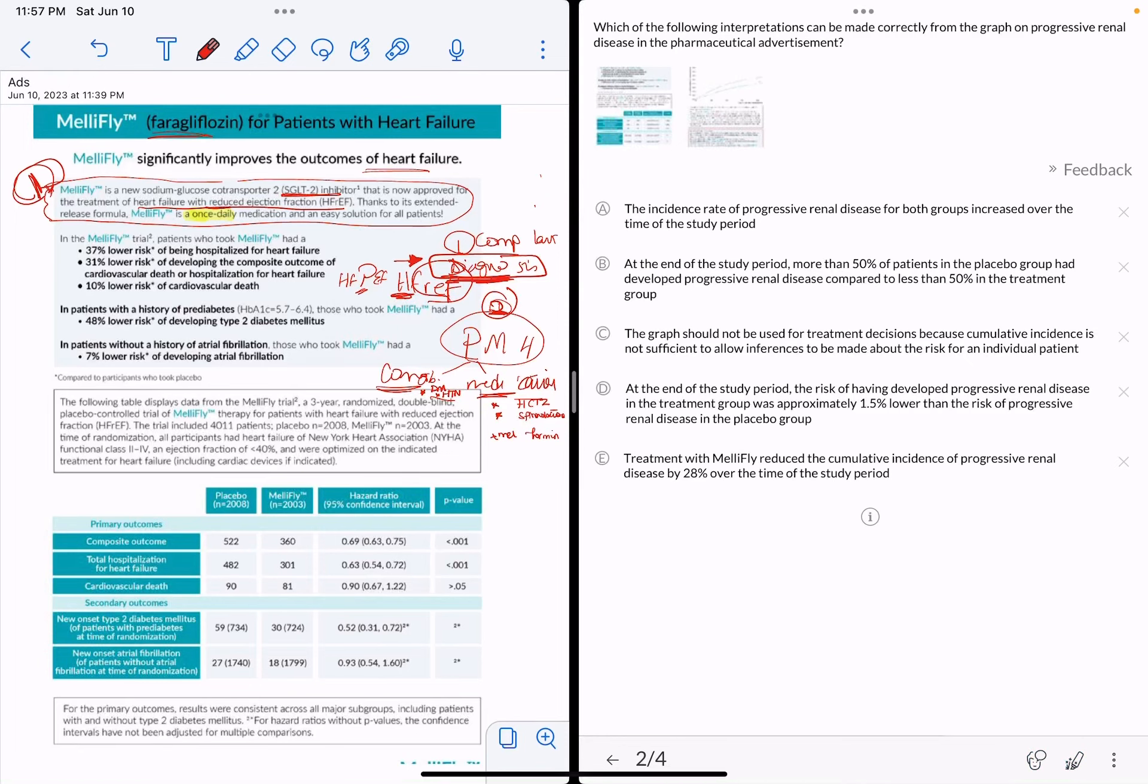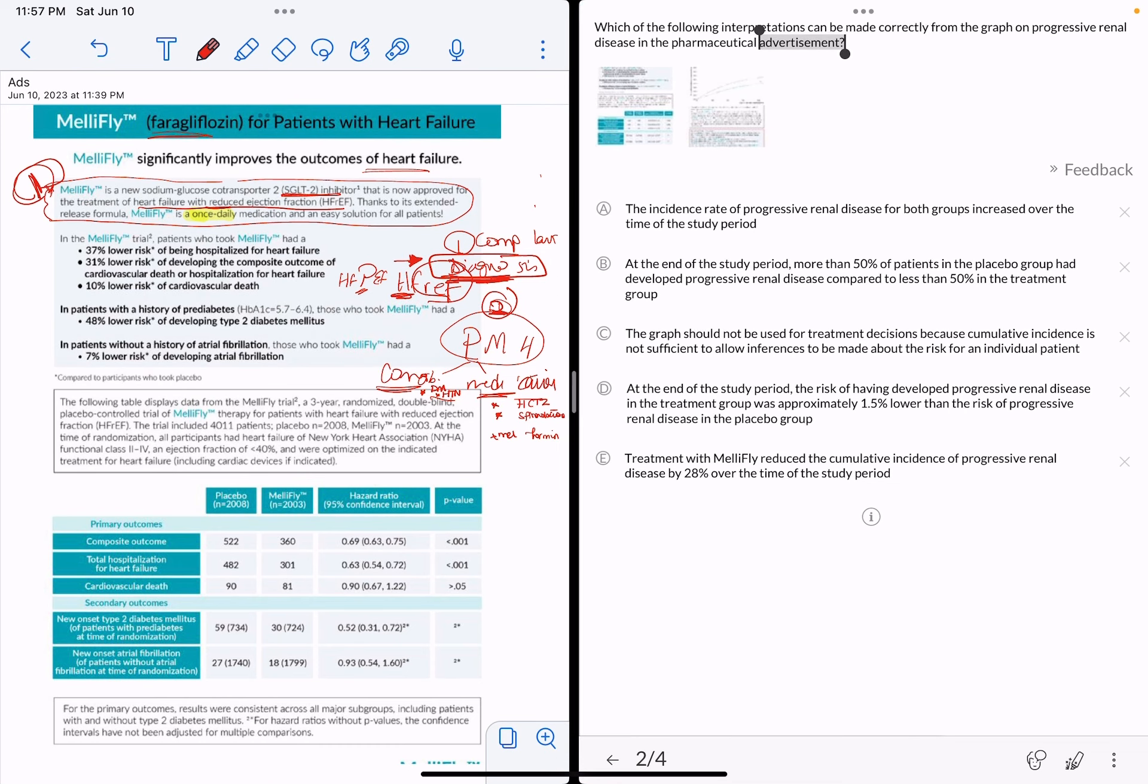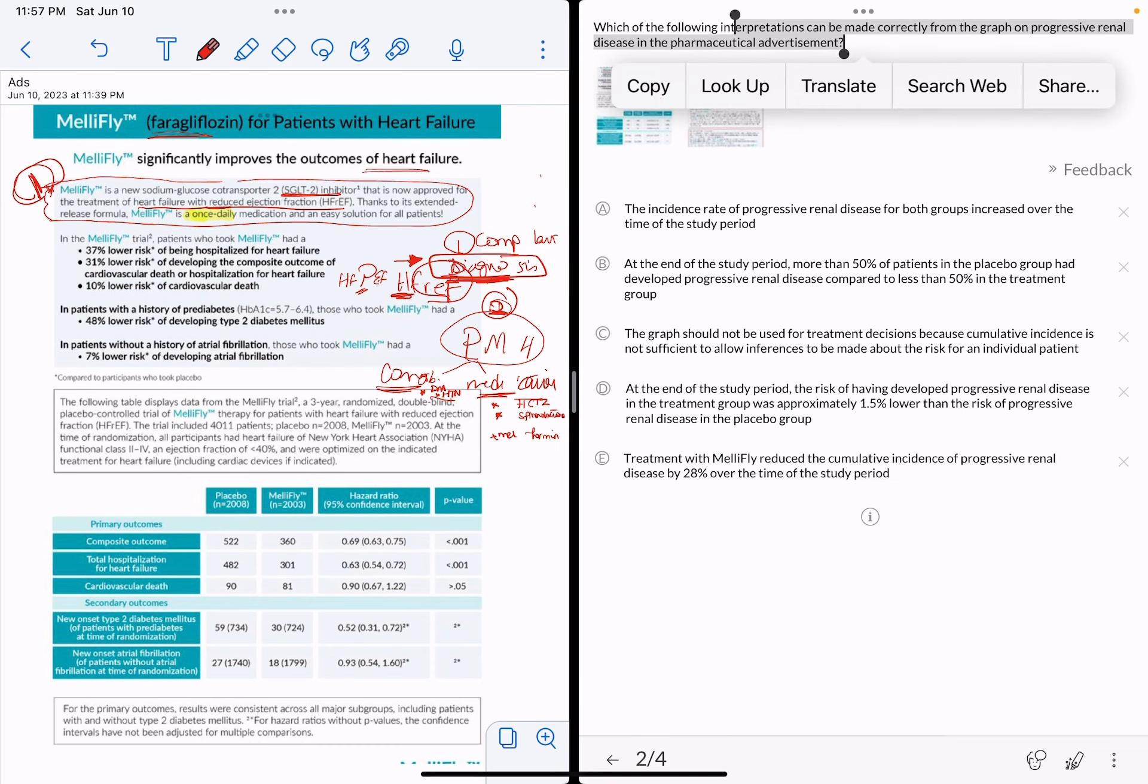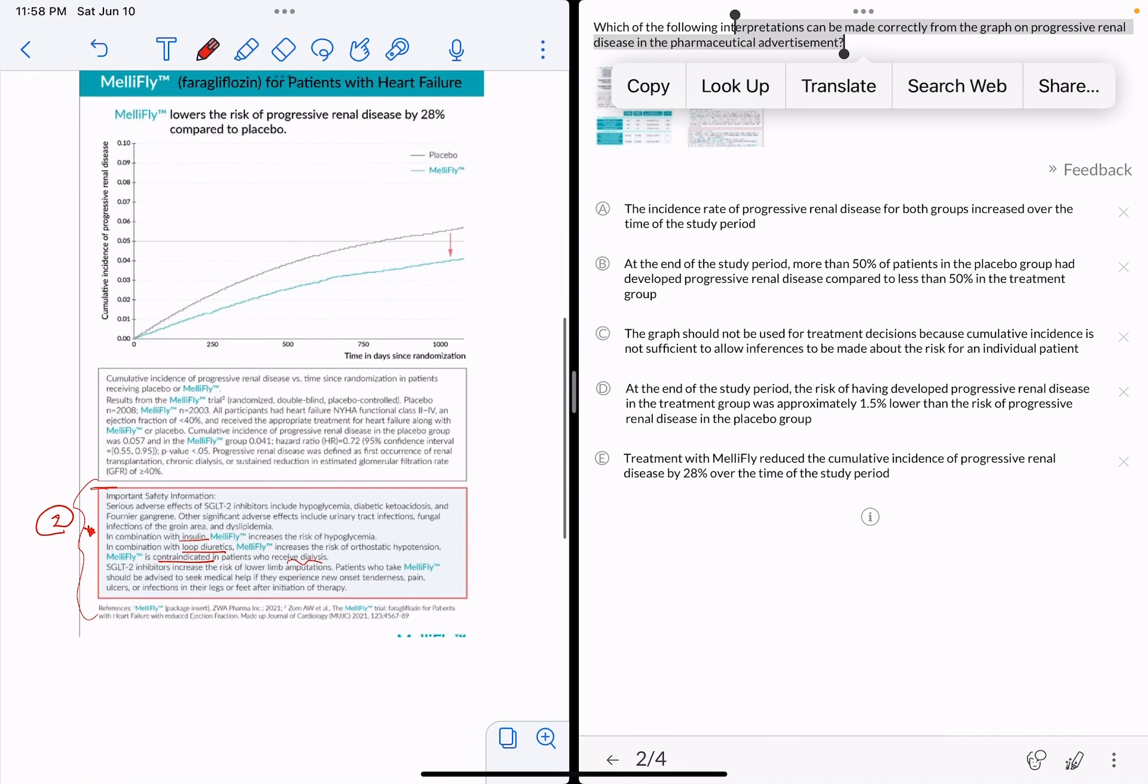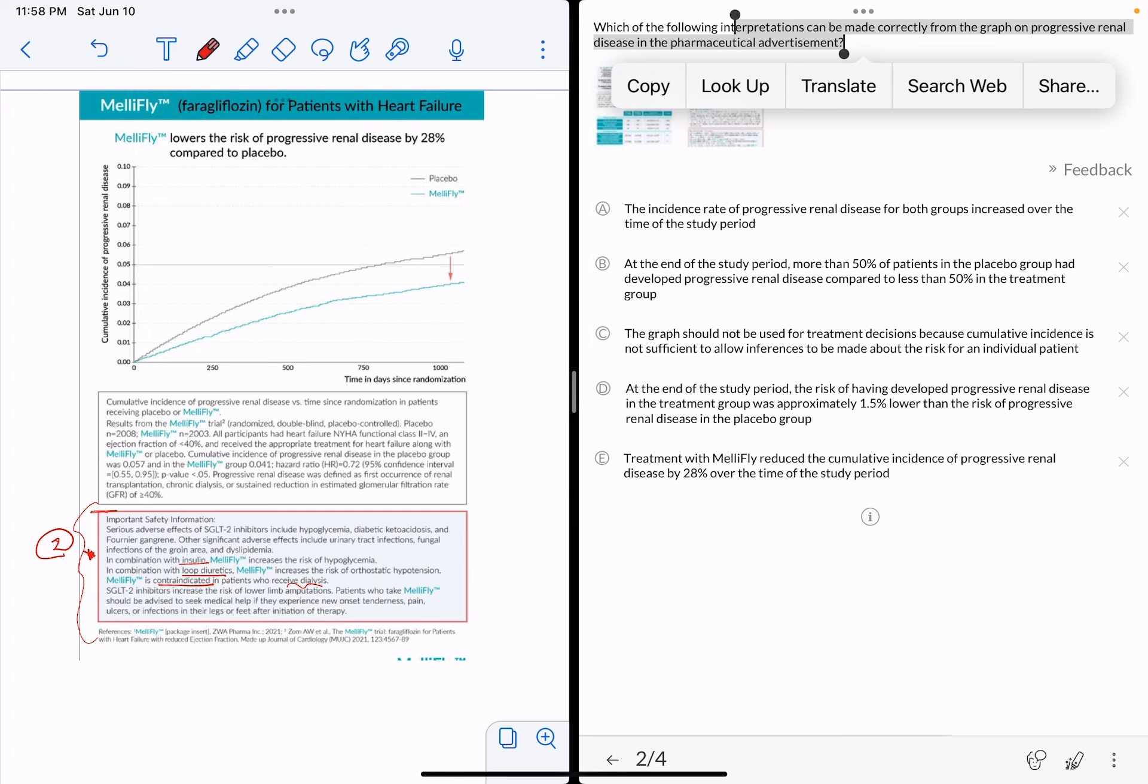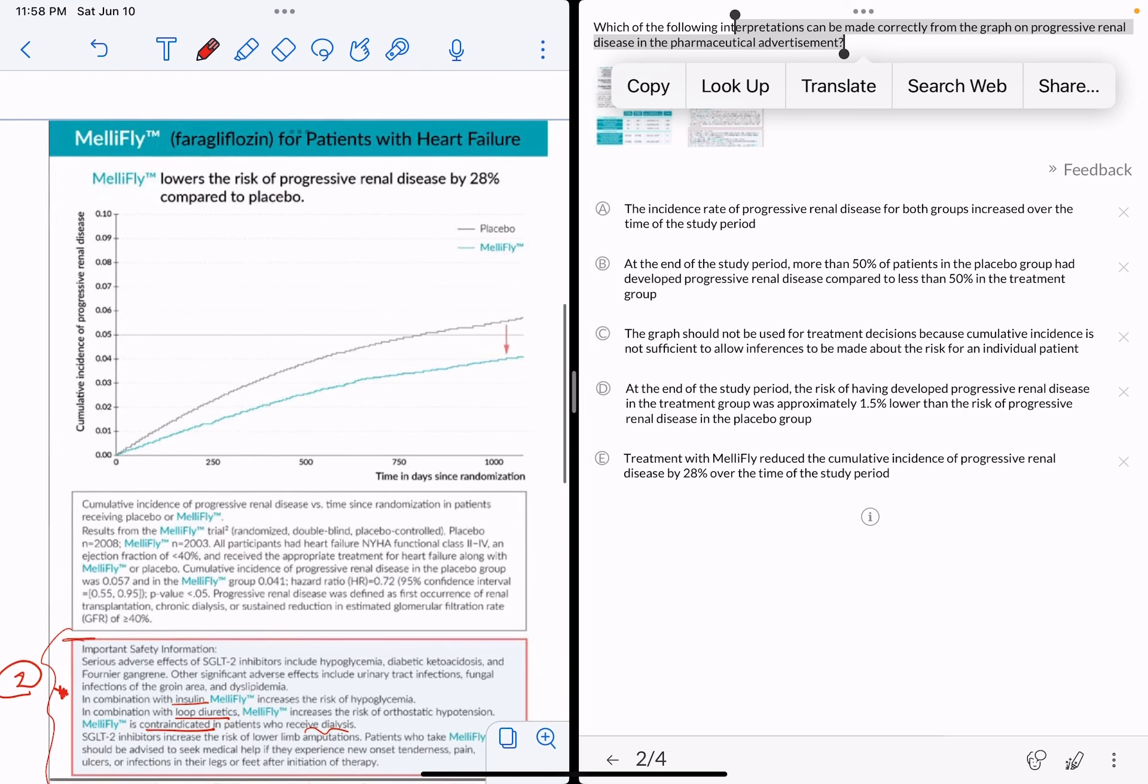Now we can read another part here: which of the following interpretations can be made correctly from the graph on progressive renal disease? So here he's going to ask you about another part of the drug ad, which is usually the second page. He's asking us about the graph, right? Before we look and get confused with all those answer choices, I want to read the graph by myself.